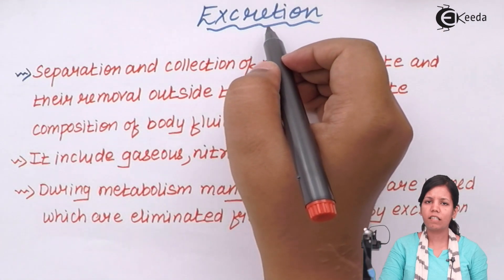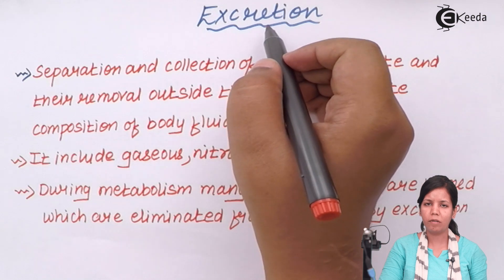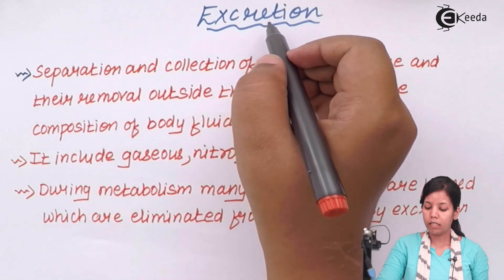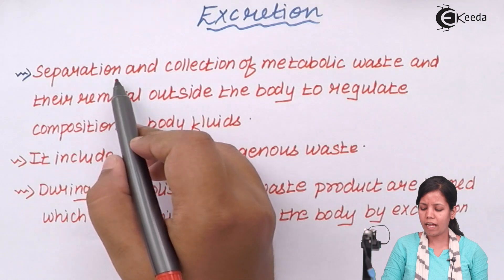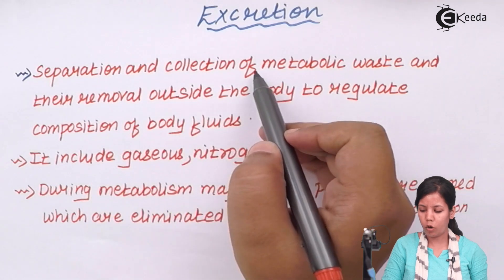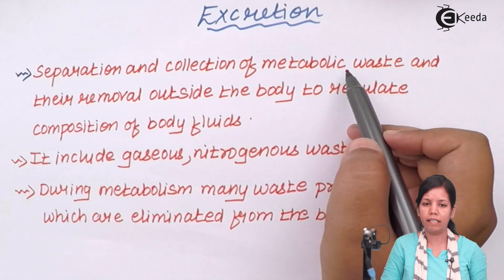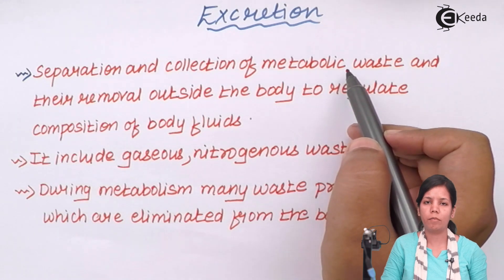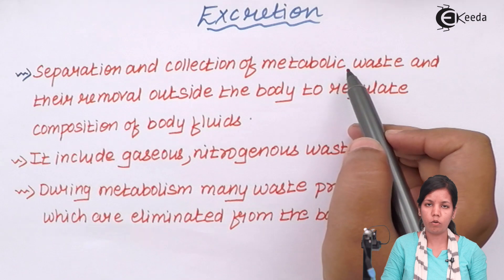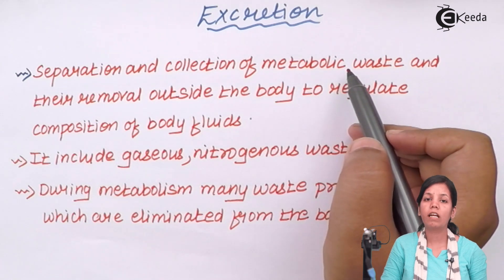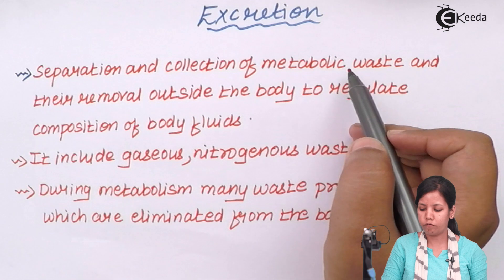Excretion is nothing but removal of waste products from the body — separation as well as collection of metabolic waste. Metabolic waste is basically generated whenever the process of anabolism and catabolism takes place, that is the breaking down as well as releasing of energy or nutrients during digestion of food.